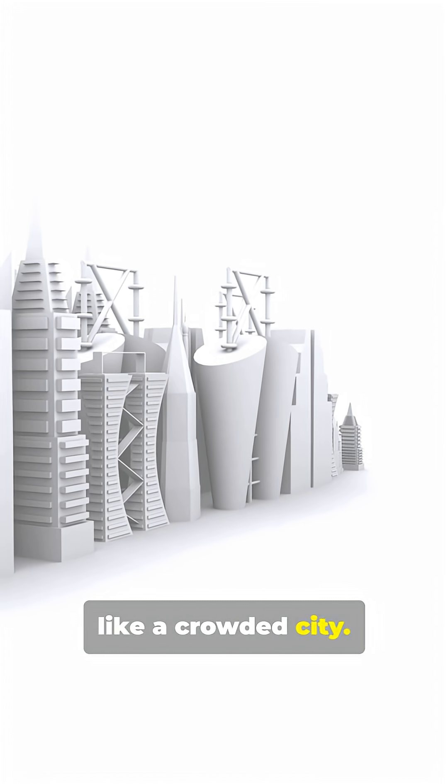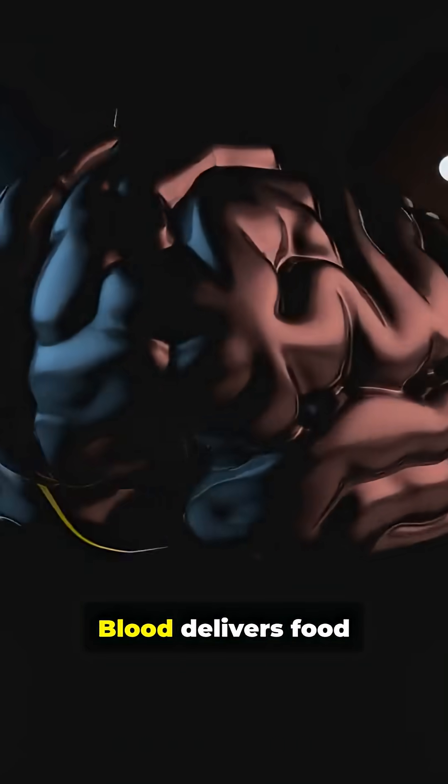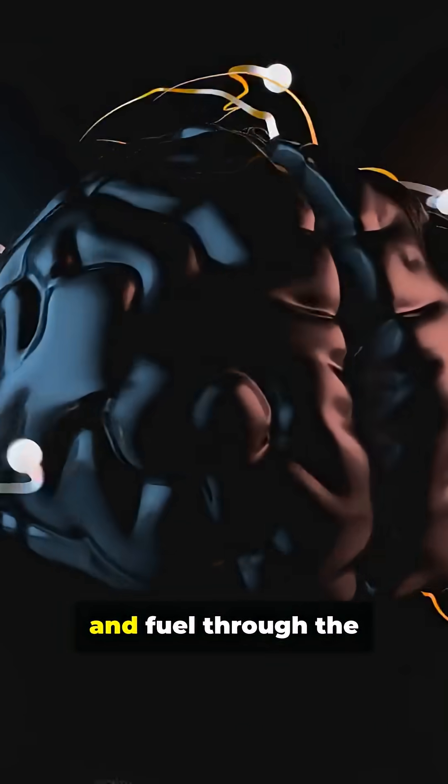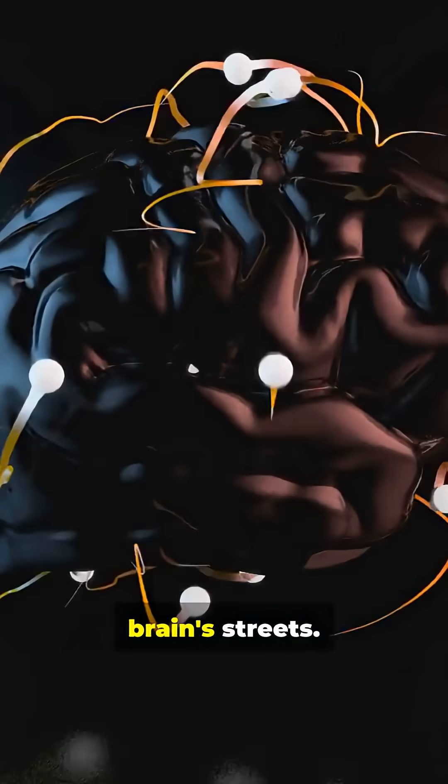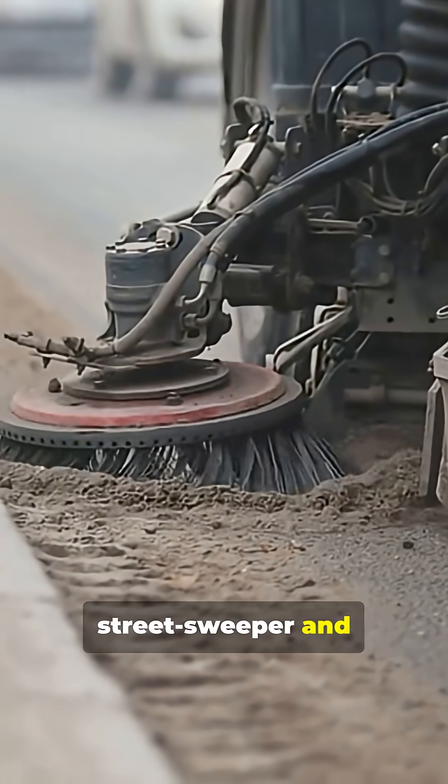Think of your brain like a crowded city. Neurons are the buildings in that crowded brain city. Blood delivers food and fuel through the brain's streets. The glymphatic system is the street sweeper and sewer combined.